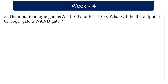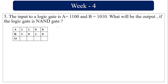The input to a logic gate is A = 1 1 0 0 and B = 1 0 1 0. What will be the output if the logic gate is a NAND gate? The NAND truth table gives: 0,0→1; 0,1→1; 1,0→1; 1,1→0. Applying this: 1·1→0, 1·0→1, 0·1→1, 0·0→1. The output is 0 1 1 1.